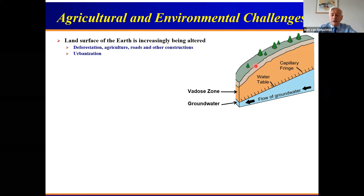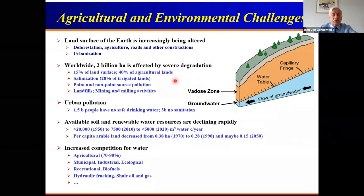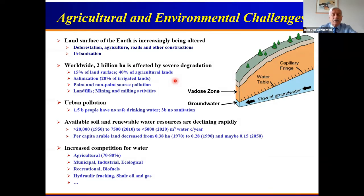We have been changing the surface in many, many ways: deforestation, agriculture, road construction, urbanization. I'm not going to go through all of them in too much detail, and I don't necessarily believe all the numbers exactly, but they give a pretty good idea about the degradation issues of the land surface — salinization, point and non-point source pollution, urban pollution, and so on.